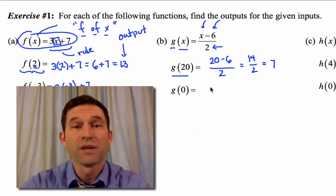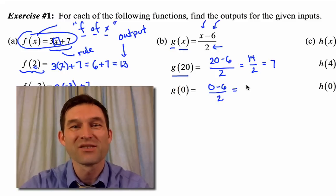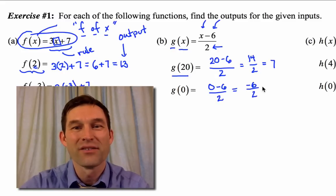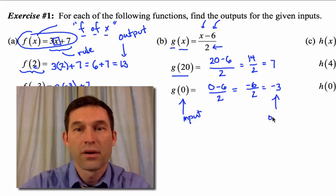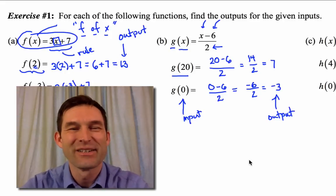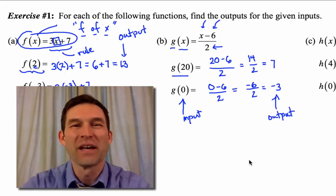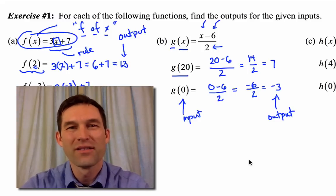g of 0 — when I take my input, watch yourself. Not 6 minus 0, but 0 minus 6, which is going to be negative 6. Divided by 2 gives me negative 3. So when the input was 0, the output was negative 3. x is your quarter, g of x is the gumball machinery, and y, the output, is your gumball.